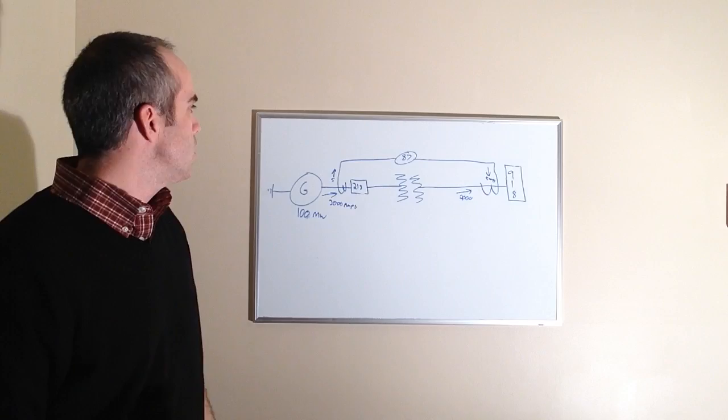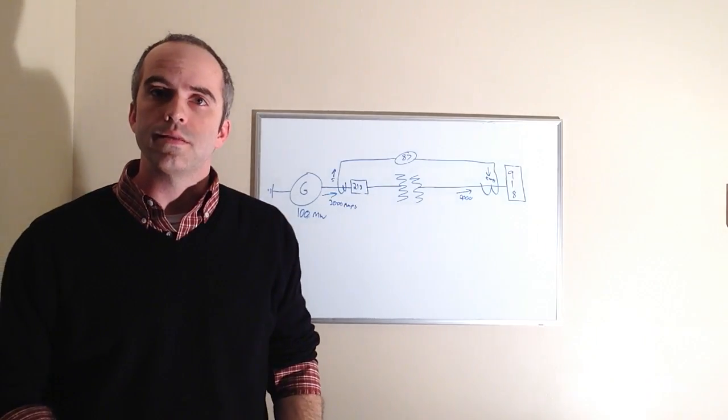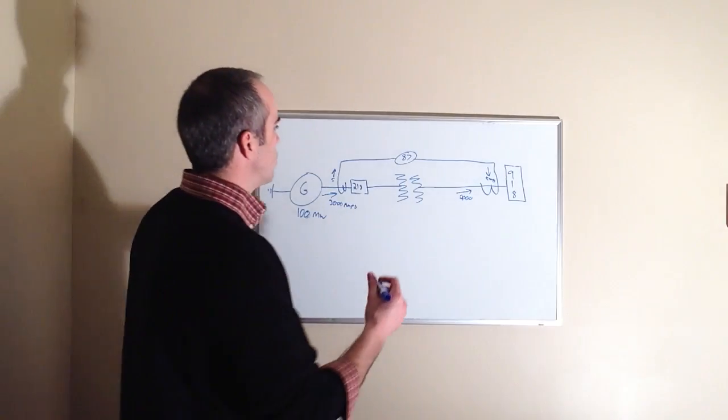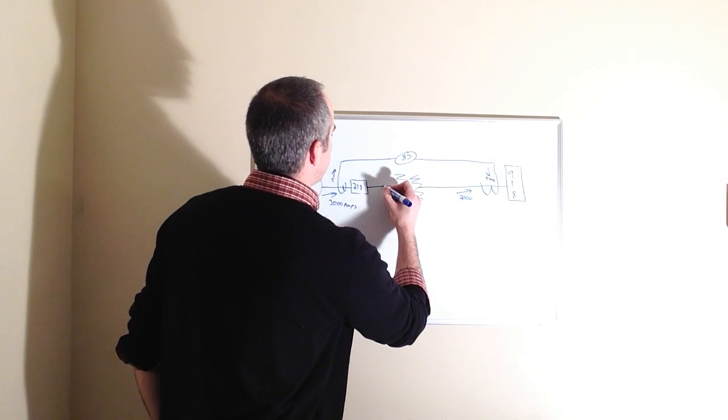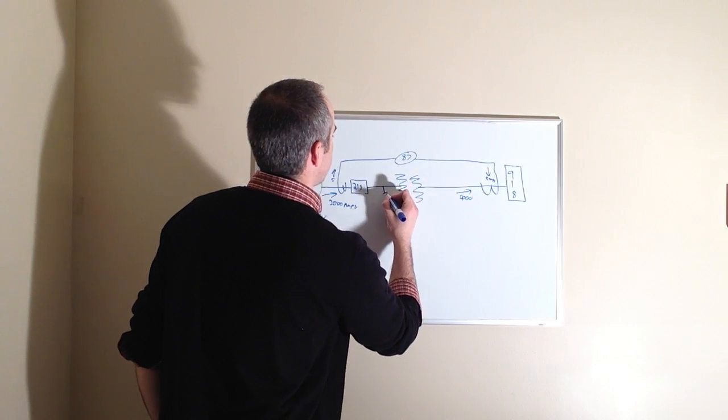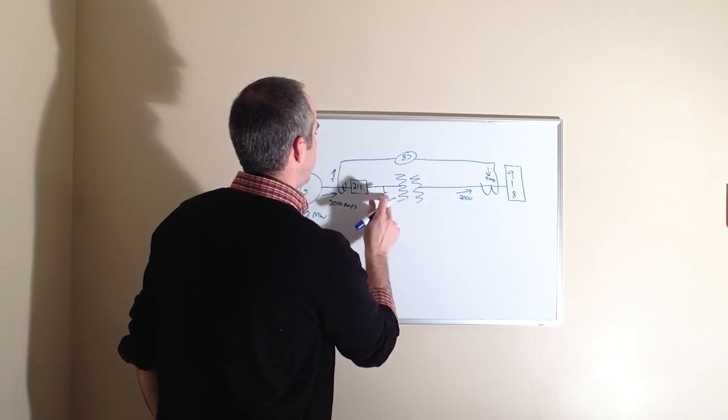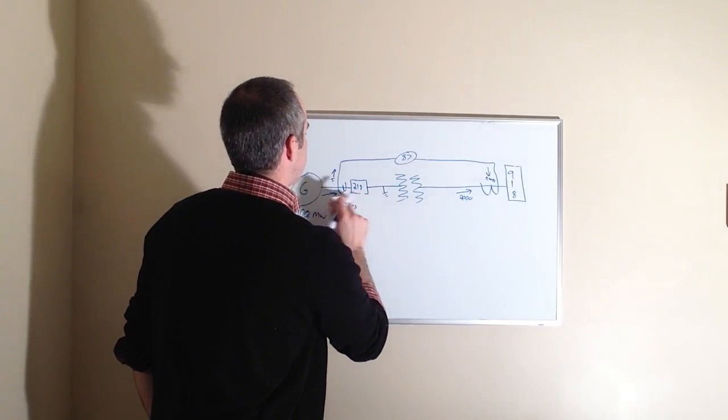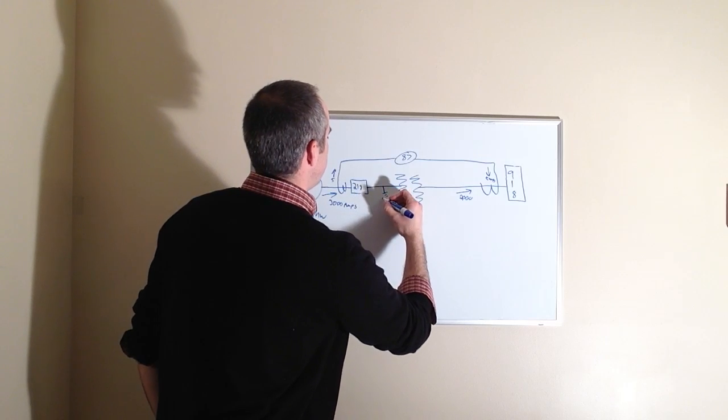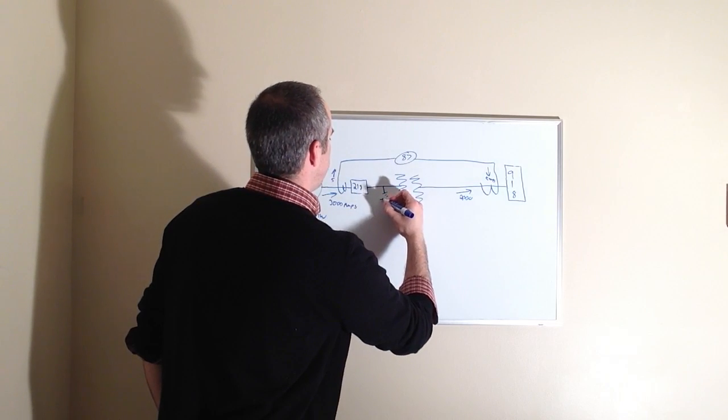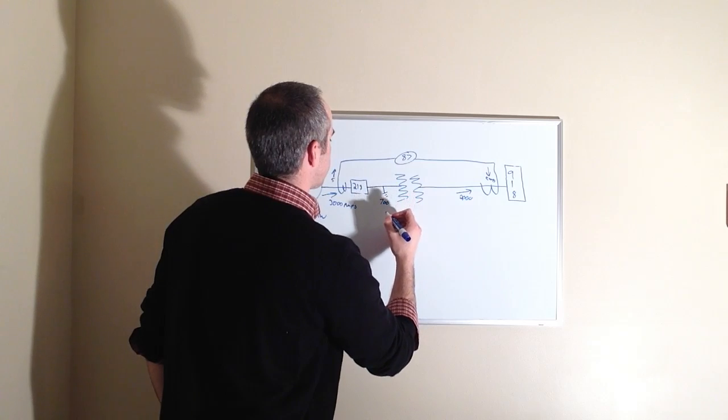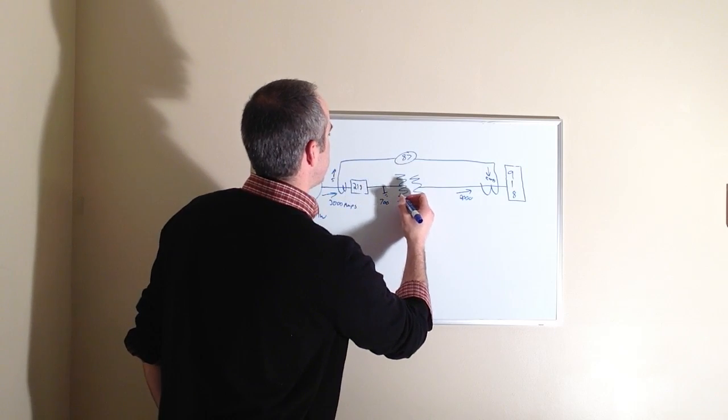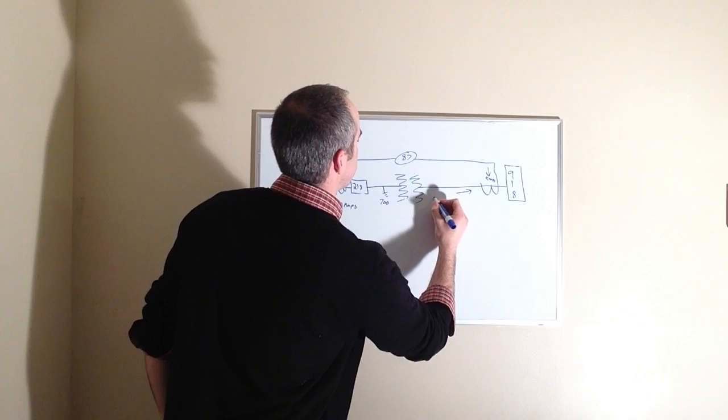We've got 5 amps here, it's calling for 5 amps here, everything's happy and balanced. Now let's put a fault to this and see how it works. Let's say we have a piece of buswork goes to ground here. So we've got 2,000 amps going here feeding the fault, or 2,000 amps going this way. Let's say we lose 700 amps here, so that leaves us 1,300 amps going here.